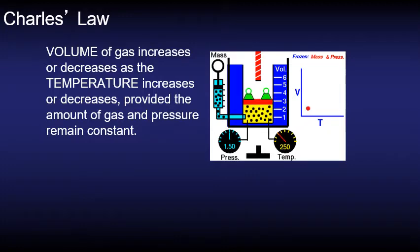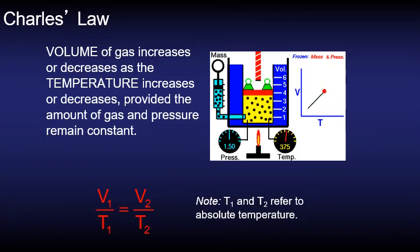The second perfect gas law we're going to study is Charles' law. Charles' law states that the volume of the gas increases or decreases as the temperature increases or decreases provided the amount of gas and the pressure remain constant. The formula that we will use to express Charles' law is V1 over T1 equals V2 over T2 and in this case temperature needs to be absolute. So if you look at the animation here you'll notice that the pressure is not changing. However, the temperature and the volume are changing and this time we have a direct correlation that means as one increases the other increases.